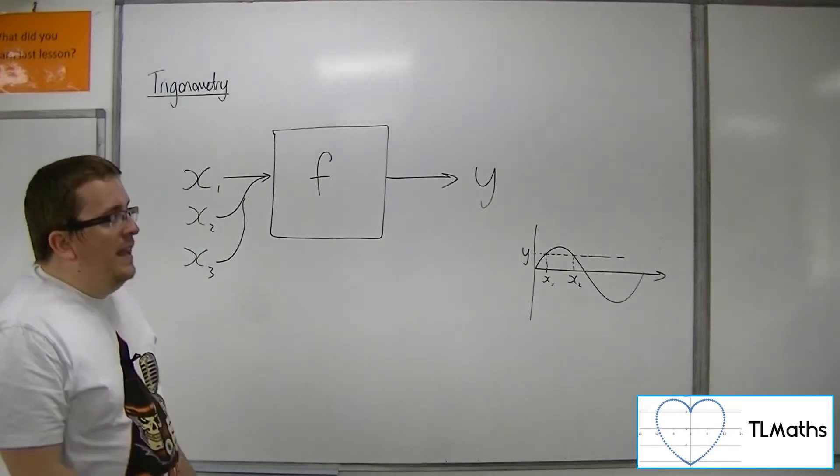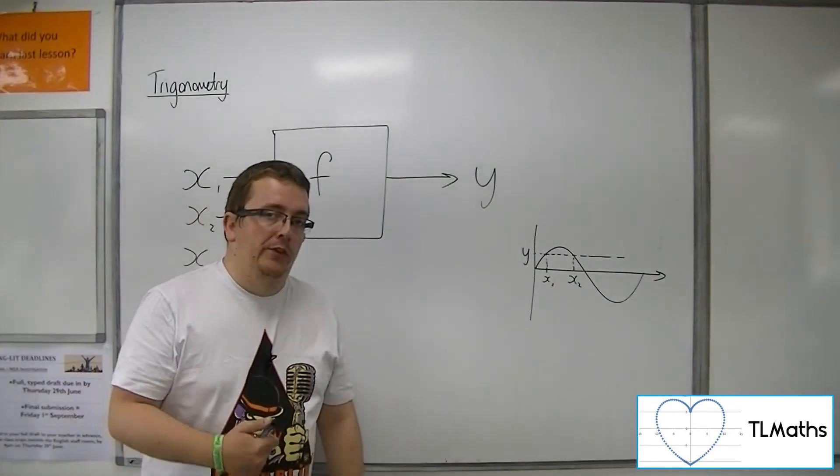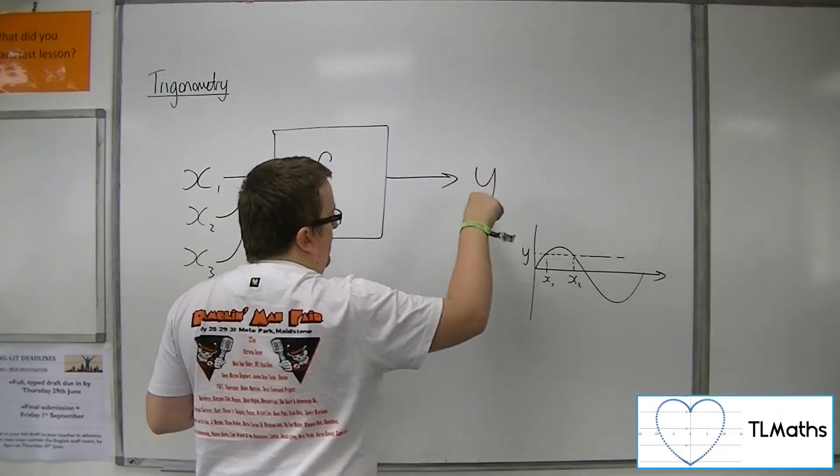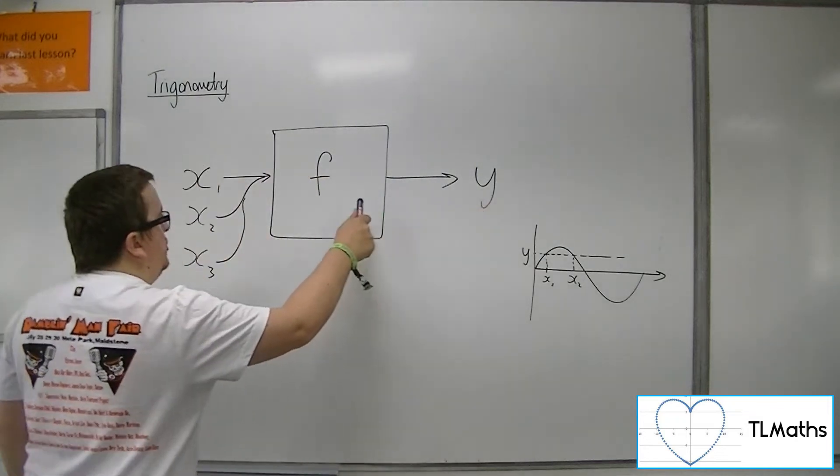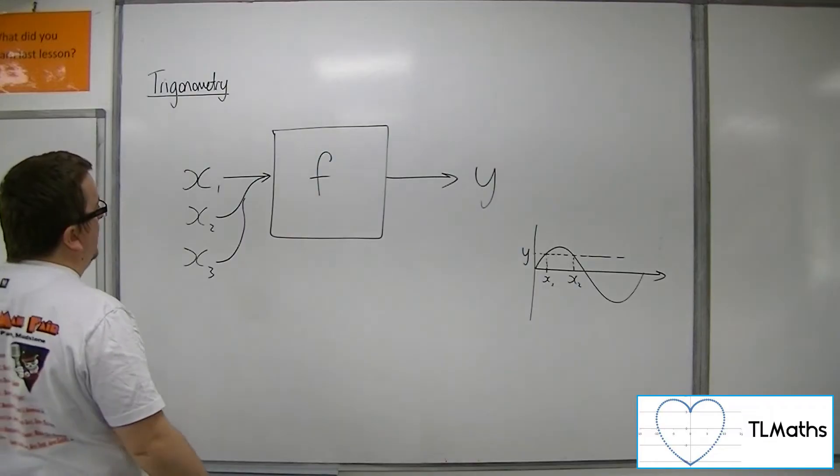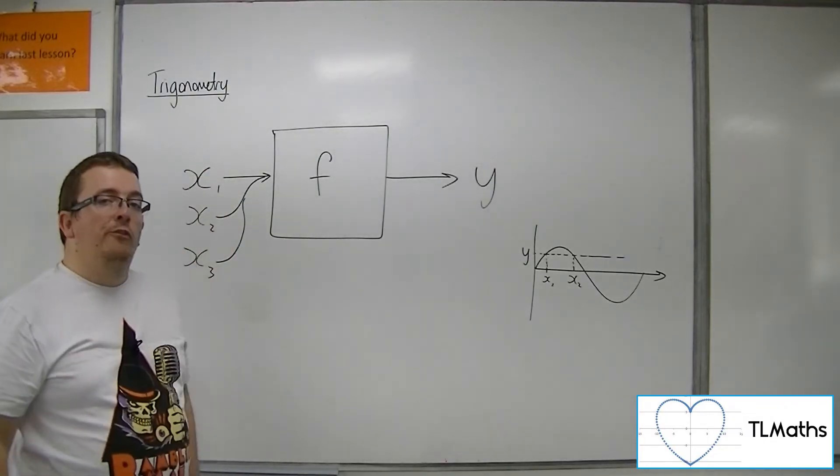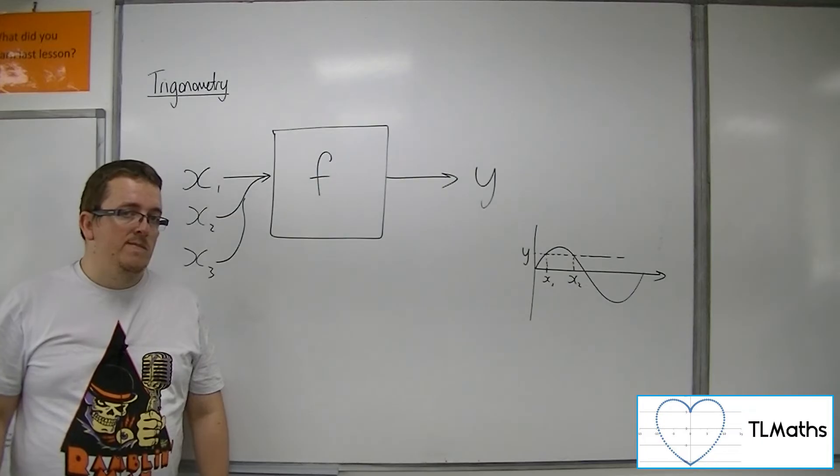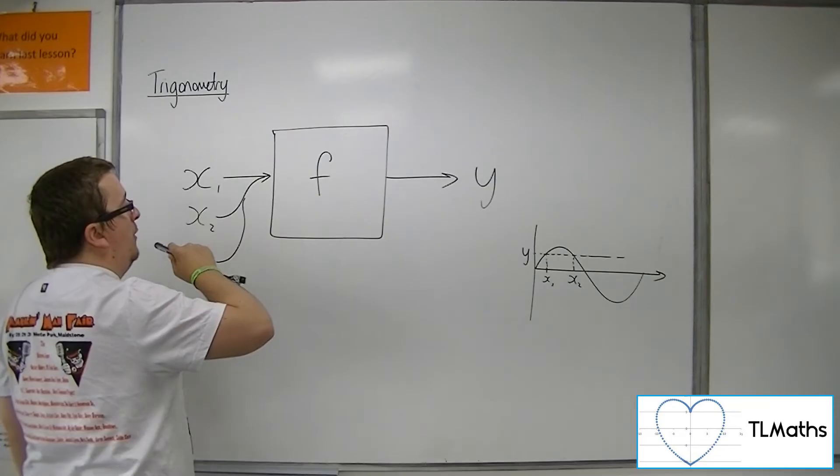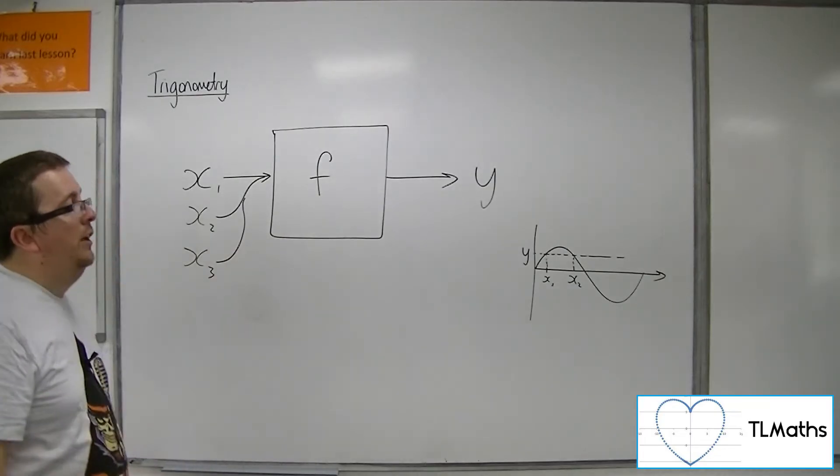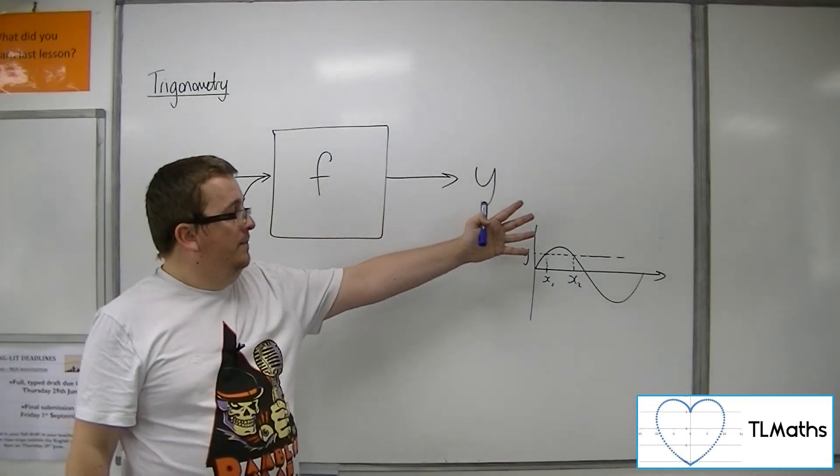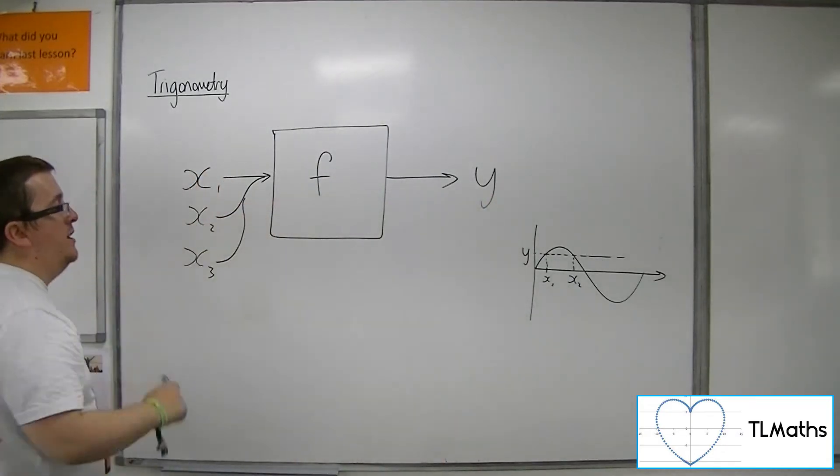The problem is when you reverse the direction. If I'm putting in my value of y back through the function, reverse engineering it, I'm then getting multiple values of x, which means that the inverse function going back through that process would no longer be a function. It's fine going one way, but going the other way, it doesn't work.